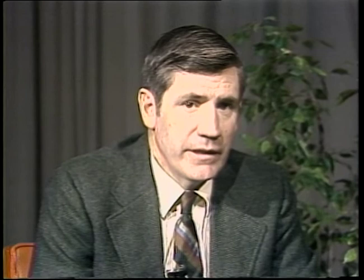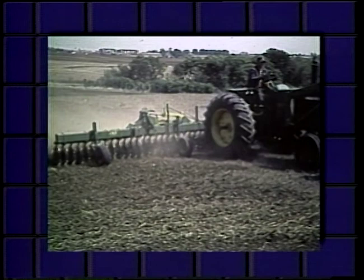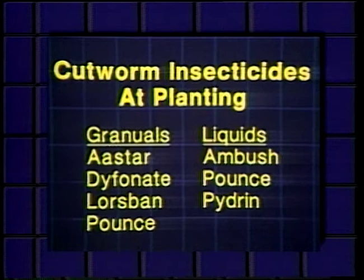Cutworm infestations in most fields occur only occasionally. On the average, Iowa experiences a major cutworm outbreak once every five years. For this reason, Iowa State University does not recommend routine use of planting-time insecticides specifically for cutworm control. Granular products registered for cutworm prevention include those on the left. The liquid synthetic pyrethroids on the right are also registered for cutworm prevention. They offer a low-cost alternative, but should not be counted on to provide residual activity comparable to the granular formulations.